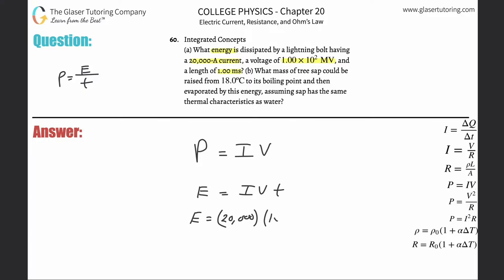So what you're going to need to do is take the 1 times 10 to the second, multiply that by 10 raised to the sixth to convert into volts. And the time, they gave us 1 millisecond, we need seconds, so it's 1 times 10 to the minus 3 seconds. I did all those conversions right there.